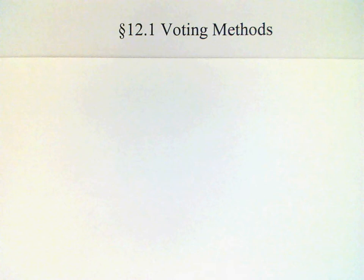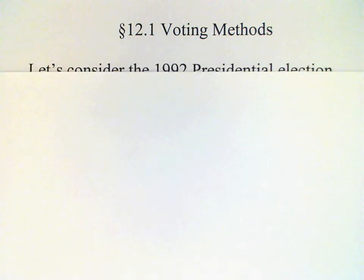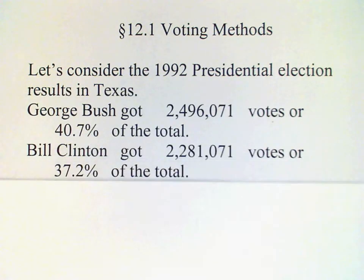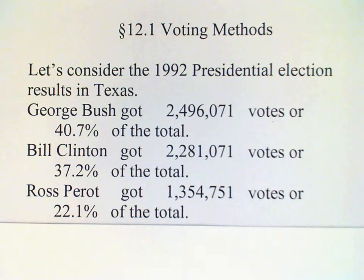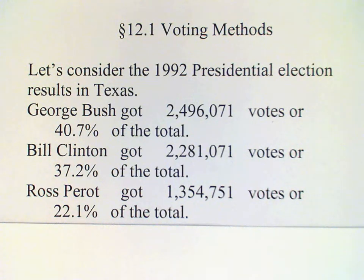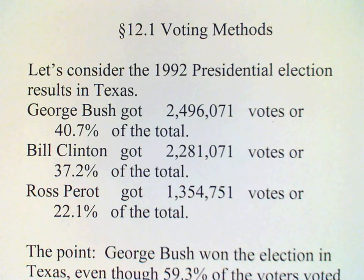I'd like to begin our study of voting methods with an example: the 1992 presidential election results in Texas. You may remember that year there were three candidates in the race — George Bush (the first George Bush), Bill Clinton, and Ross Perot. Bush got 40.7%, Clinton got 37.2%, and Ross Perot got 22.1%. So according to the rules, George Bush won the election. The thing to notice here is that he only got a little over 40% of the vote, which means that nearly 60% of the people voted against him.